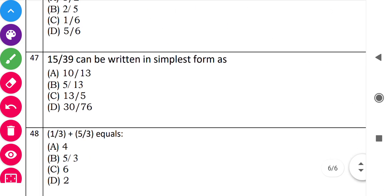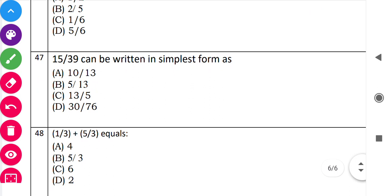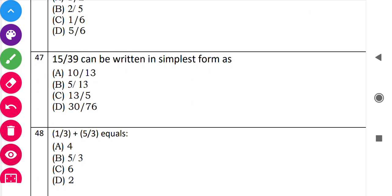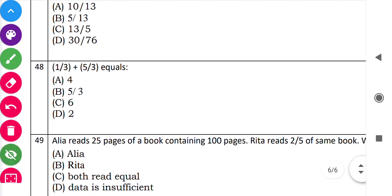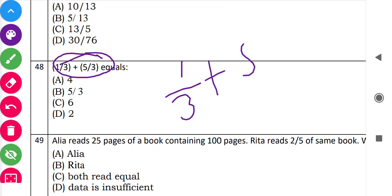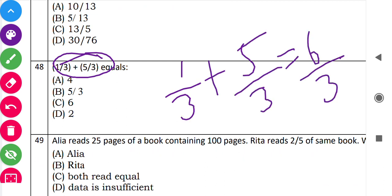Question 47: '15 upon 39 in simplest form.' Cancel by 3: 15 divided by 3 equals 5, and 39 divided by 3 equals 13. So the simplest form is 5 upon 13. Option B is correct. Question 48: '1 by 3 plus 5 by 3.' Since the denominators are the same, add the numerators: 1 plus 5 equals 6 by 3, which simplifies to 2. The answer is 2.